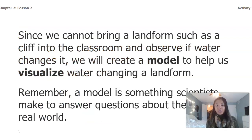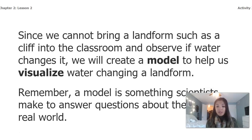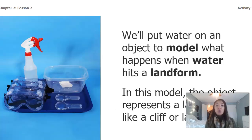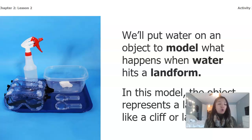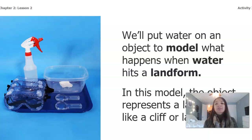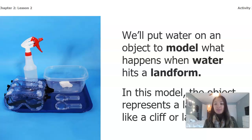Since we cannot bring a landform such as a cliff into a classroom and observe if water changes it, we will create a model to help us visualize water changing a landform. Remember that a model is something scientists make to answer questions about the real world. We're going to put water on an object to model what happens when the water hits a landform. Today the object that we have is flour. Baking flour is obviously not as solid as a cliff or a valley, but you'll still get the idea that water can change something. In this model, the flour will represent the landform, like a cliff or a large rock.